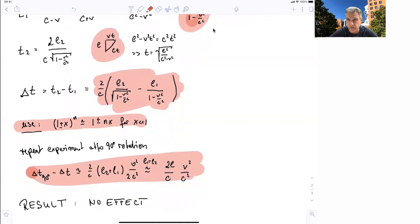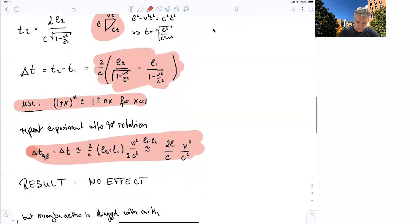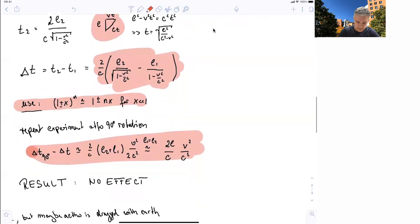The result of the experiment was there was no effect. They tried, they improved the experiment, they tried to find smaller effects, they didn't find anything. The reason for this is that there is no ether. So we can use this now to make a case against the ether. But you could say that maybe ether is localized around the earth, moving with the earth, or maybe we are living in the universe. And so in the next video, we'll look at a case against that scenario as well.